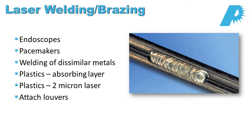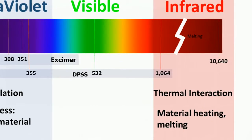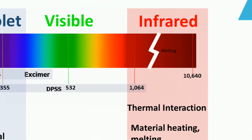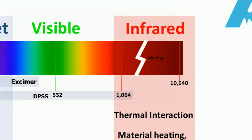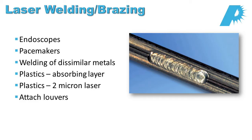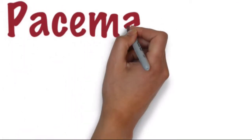So, another application area is laser welding and brazing. Laser welding is generally done with infrared lasers. Infrared lasers are heat lasers, hot lasers. And for these joining applications, that's generally what's needed. We use these welding technologies quite frequently in things like endoscopes, endoscope manufacturing. A very high usage in pacemaker manufacturing.